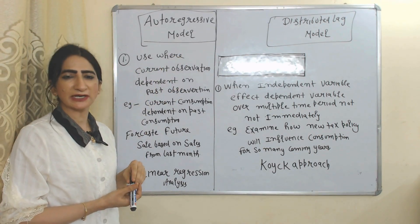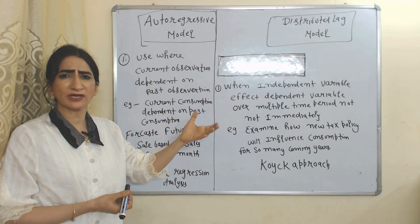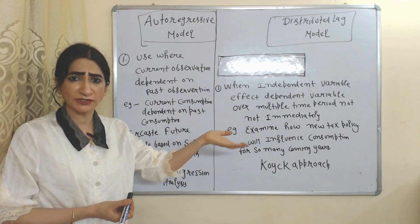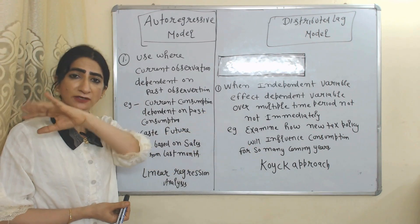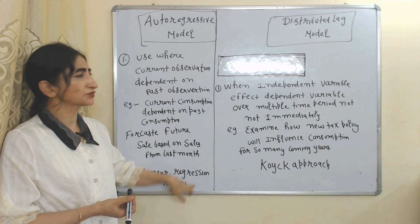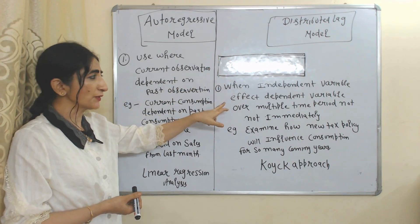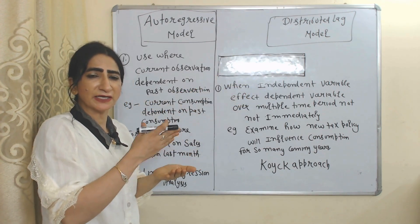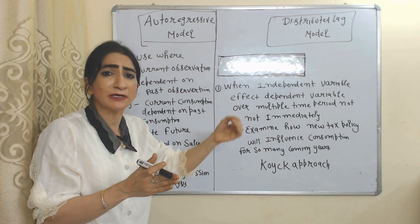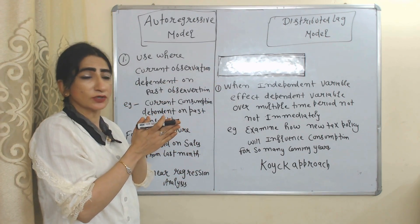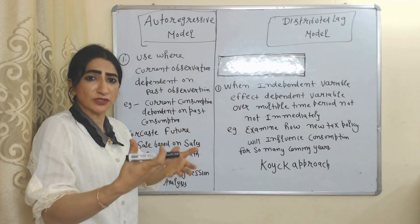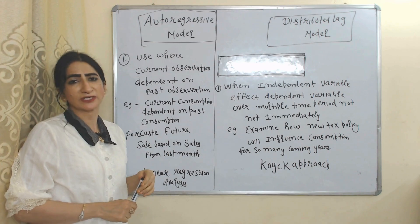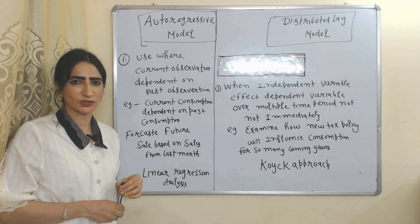We use the autoregressive model when current or future observations depend on past observations — for example, current consumption depending on past consumption, or future sales depending on past sales. Linear regression analysis is associated with the autoregressive model. We use the distributed lag model when an independent variable affects the dependent variable over multiple time periods, not immediately — for example, to know how a new tax policy influences the consumption of people over coming years. The Koyck approach is associated with the distributed lag model.